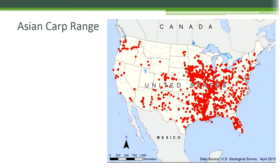The invasive Asian carp are widespread across U.S. waterways, especially in Midwest rivers like the Illinois, Ohio, and Mississippi rivers. So far, no Asian carp have been detected in the Great Lakes. The carp have been discovered in the waterways leading into the Great Lakes.